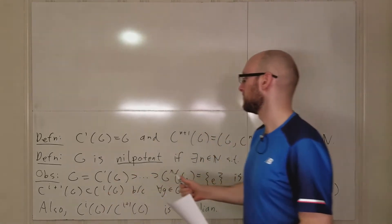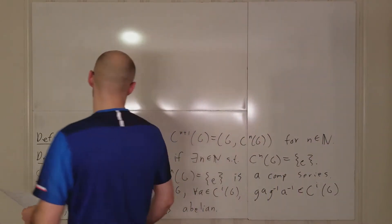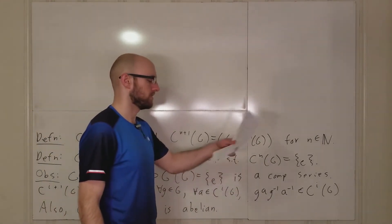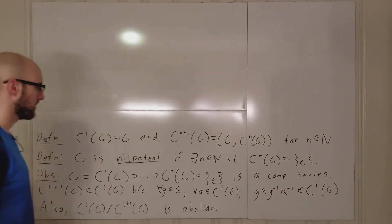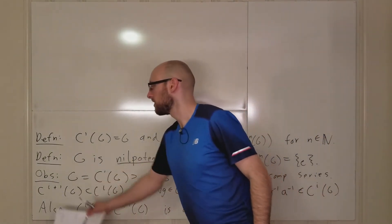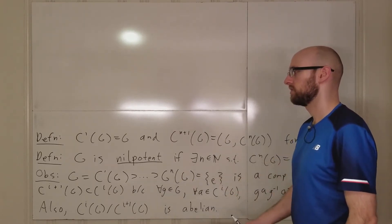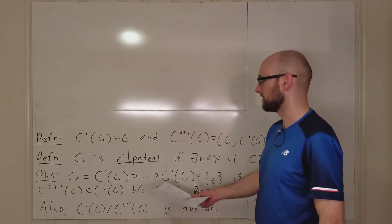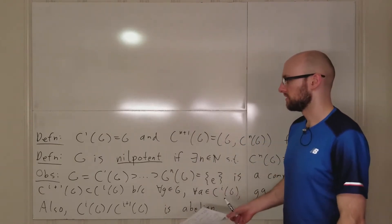We are starting to talk about nilpotent groups. We define what they are: there exists some n such that C^n(G) = e. You get a composition series out of this. I changed some notation from last time — I had 'n' here, which is bad notation because I had that as the index at the end of this composition series, so it's confusing.